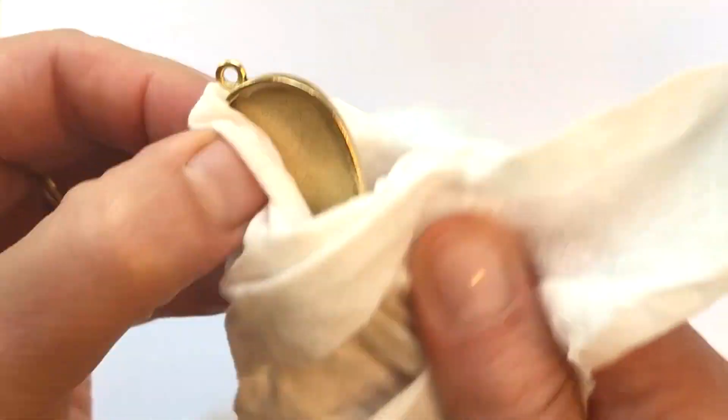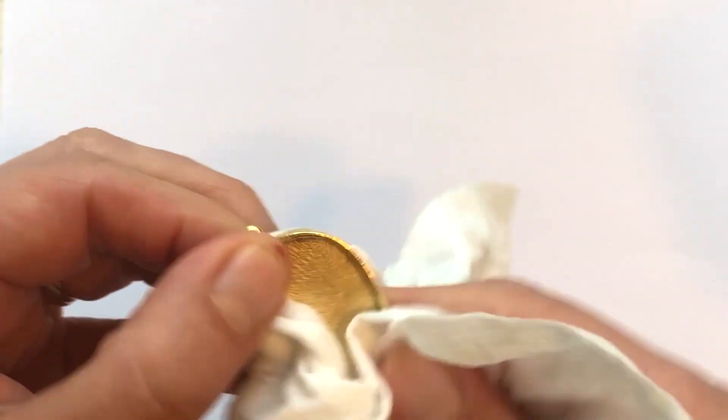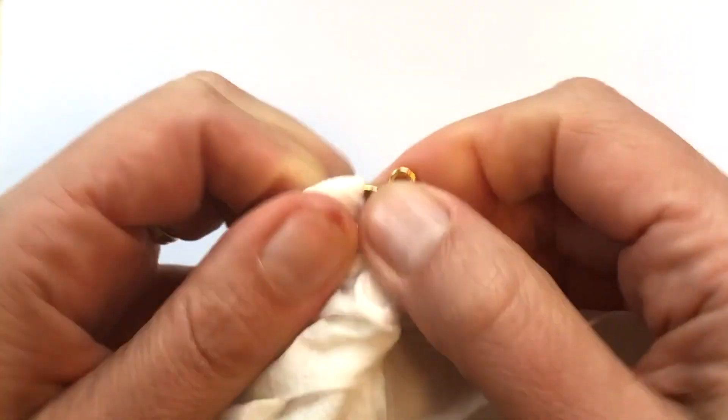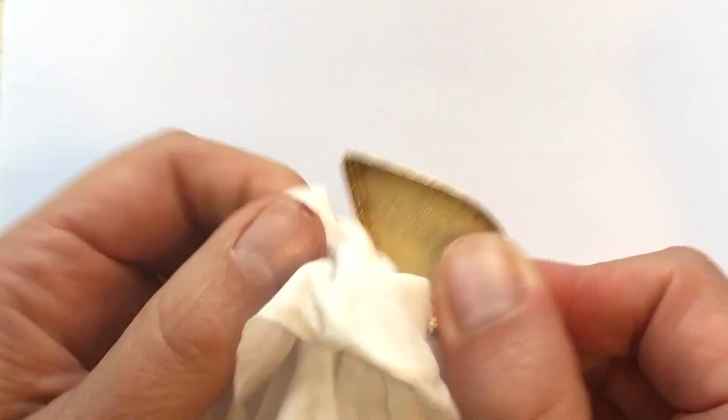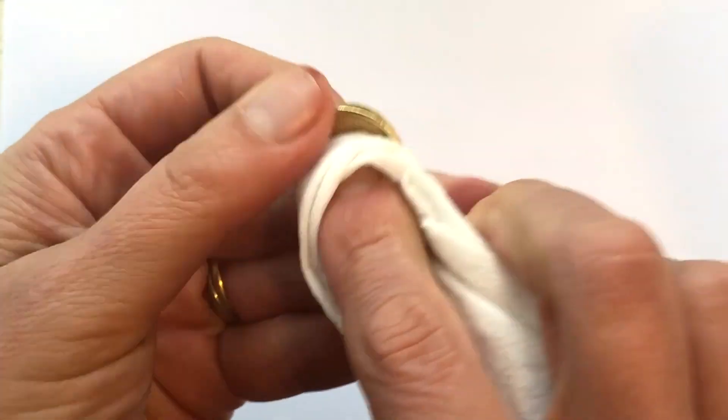Then with a wet wipe, just go ahead and wipe down any of that oxidization, especially from this lip area. Especially when we're working with the resin, because we pull it over onto that lip area and down into the base of the bezel.